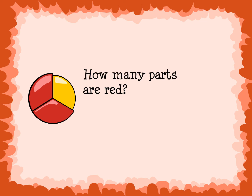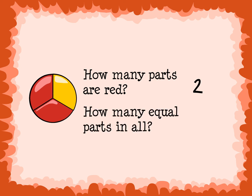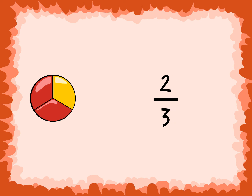Look at this circle. How many parts of the circle are red? 2 — which is the numerator. And how many equal parts are there in all? 3 — which is the denominator. What is the fraction for the red part of the circle? 2 over 3, or 2 thirds.